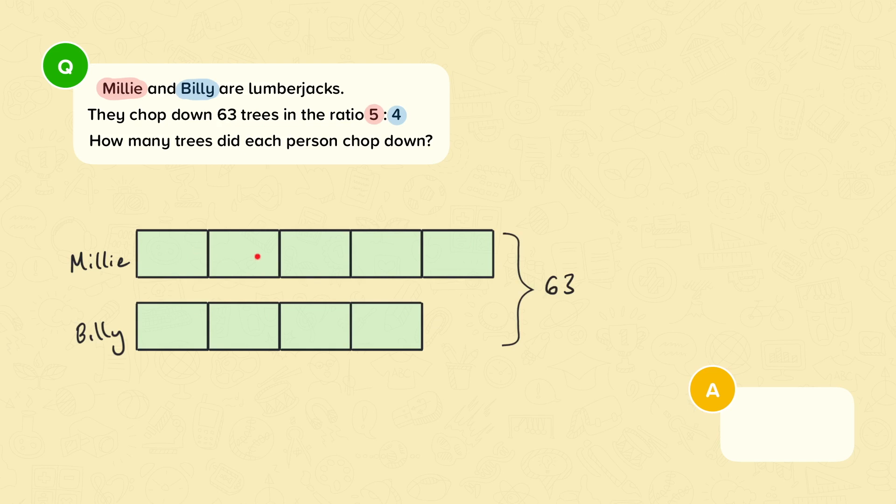We can work out how much each person cut down by working out what one part is. We do this by dividing the total amount of trees cut down by the total amount of parts in the ratio. There are five parts here and four parts here. So five plus four is nine. There are nine parts in this ratio. We must divide 63 by nine. 63 divided by nine is seven. So each part is equal to seven.